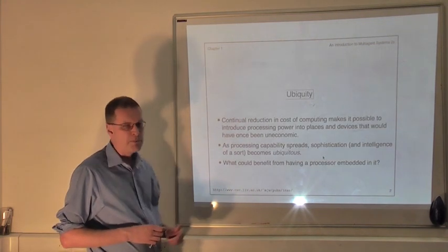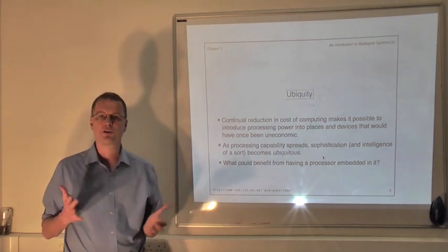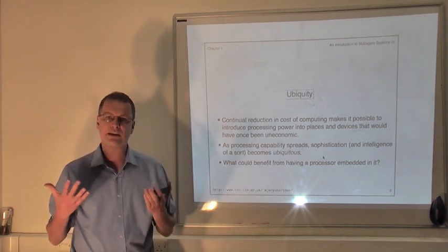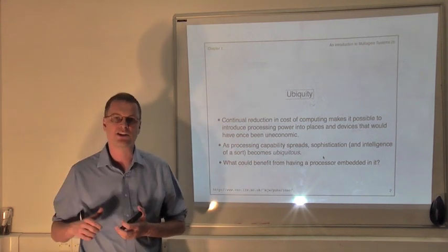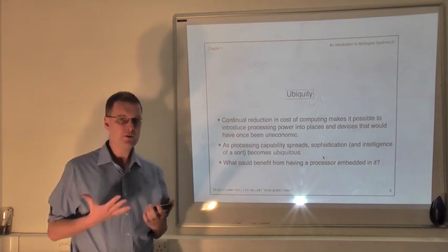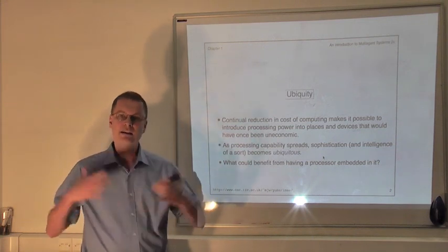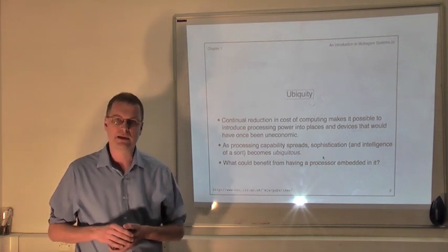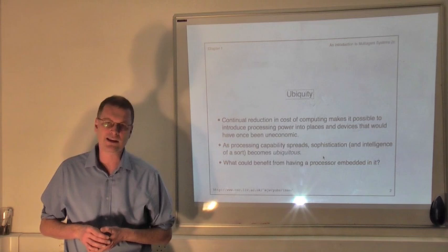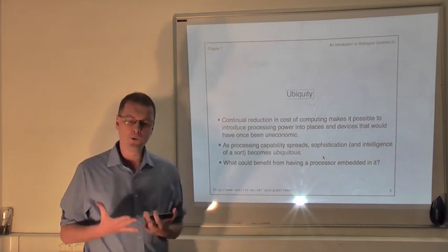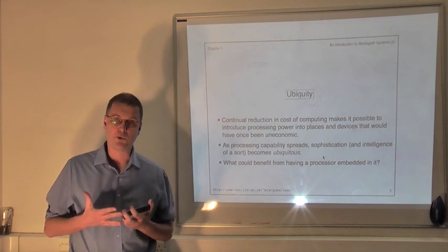So the first one, ubiquity. When something's ubiquitous, it just means it's everywhere. And when we talk about ubiquitous computing, we mean computer processing power everywhere, in every technological artifact that we construct. And this ubiquity that we're seeing, the increasing spread of computer processing power into devices and places that we wouldn't have imagined putting them a few years ago, is happening for a number of reasons, but most importantly it's happening because of things like Moore's law.